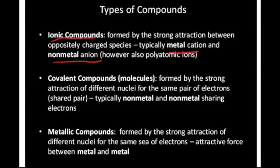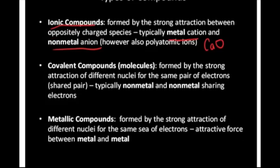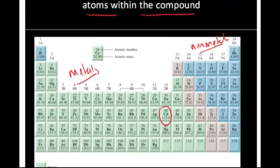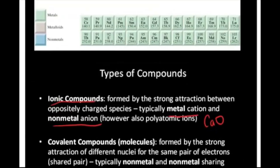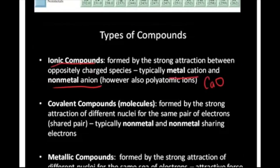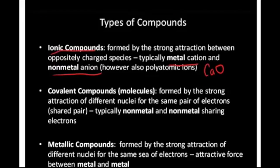The simplest case is just a metal cation and a non-metal anion. So whenever you see a compound — let's say calcium oxide — you would go back to the periodic table, find where calcium is, find where oxygen is, identify them as a metal and a non-metal, and be able to predict that compound is an ionic compound.